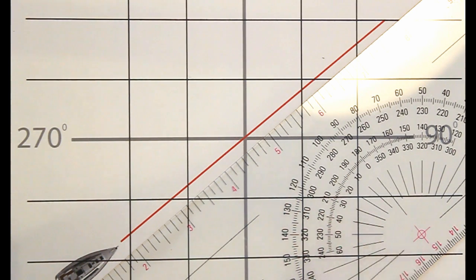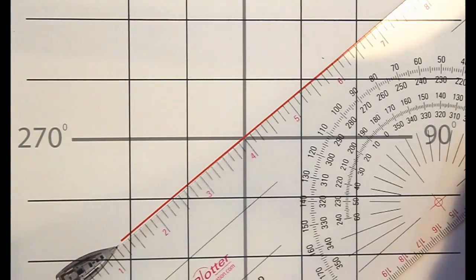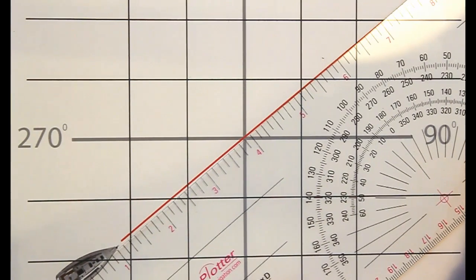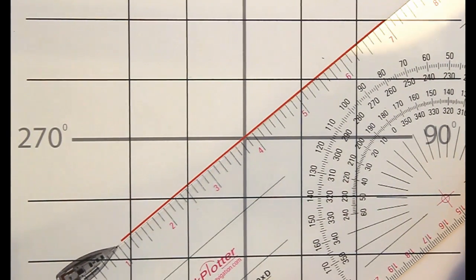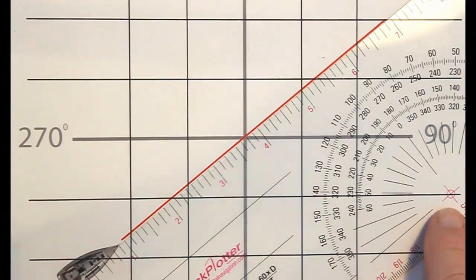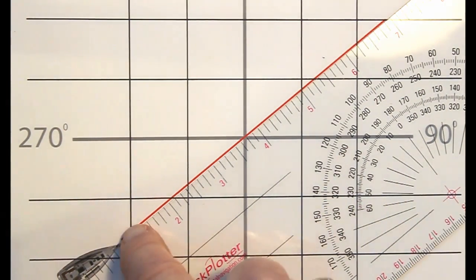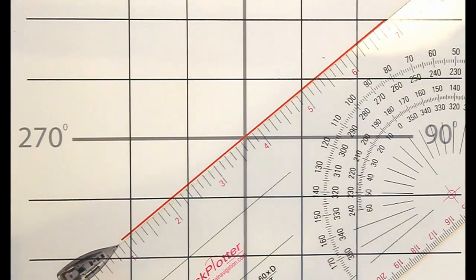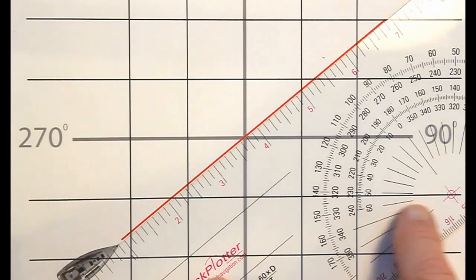Next, we put the bullseye either on a line of longitude or a line of latitude. In this case, I'm going to use the lines of latitude because that's closest. I just slide it up and make sure that I have the bullseye on the line of latitude and the edge of the plotter along the course line. And then I read off from here.